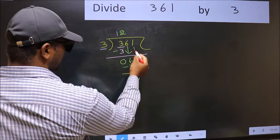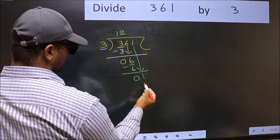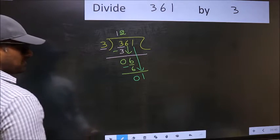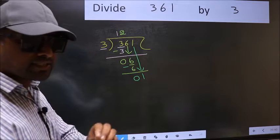After this, bring down the beside number. So, 1 down. After this step, the mistake happens. And the mistake is this.